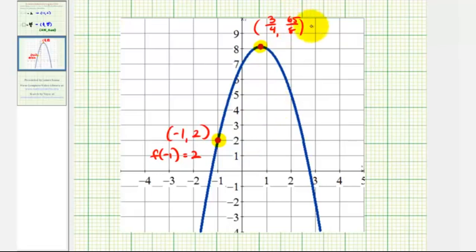Or to verify this from the graph, it would probably be more helpful to have the decimal coordinates, which would be 0.75, 8.125.